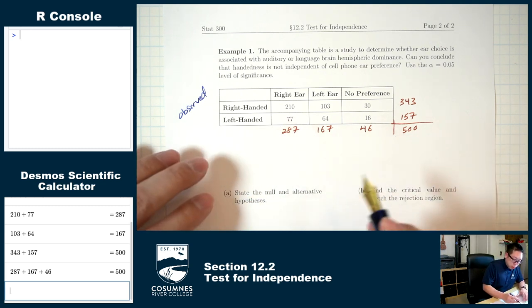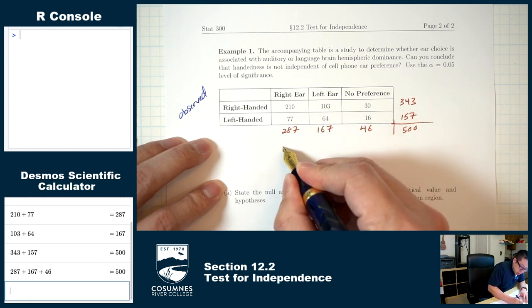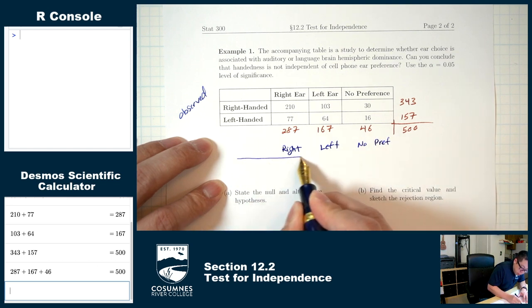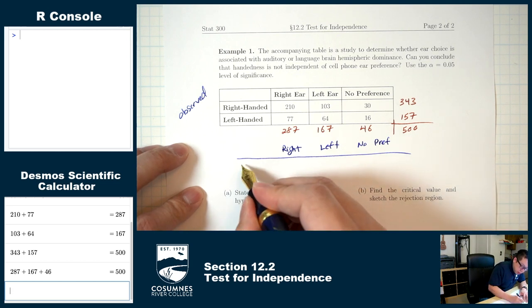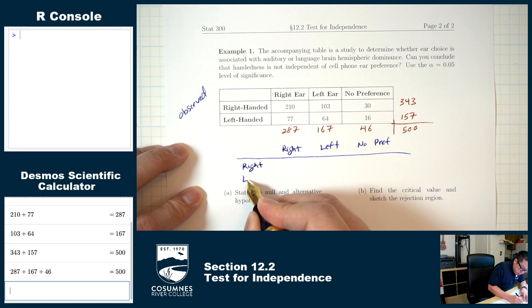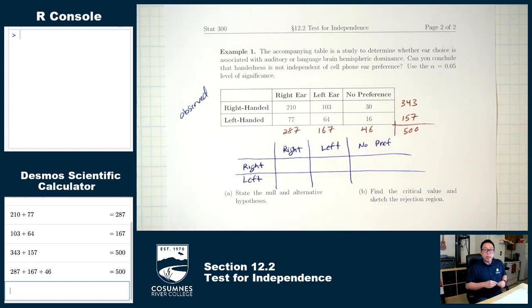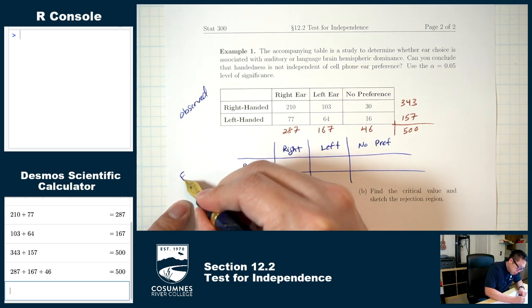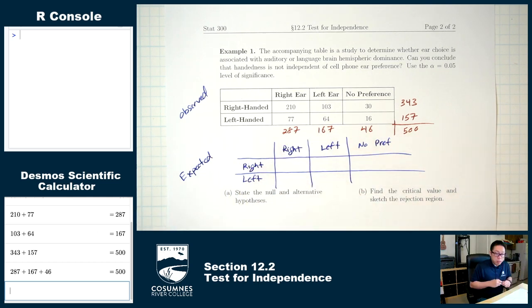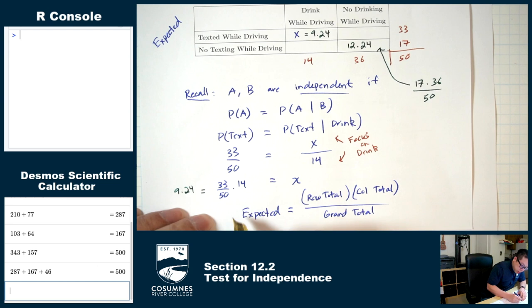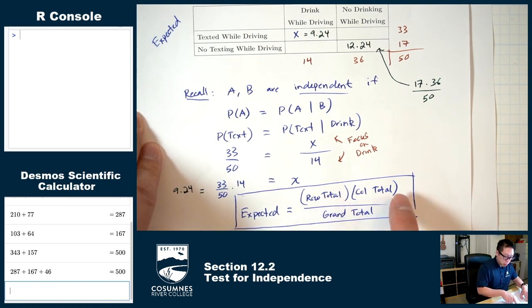Now I need to recreate this table for the expected counts, with columns: right, left, no preference, and rows: right-handed, left-handed. To fill in the expected table we use the formula from earlier: row total times column total divided by grand total. Let me put a box around that — it's probably the most important thing: expected equals row total times column total over grand total.